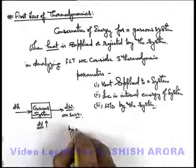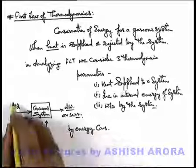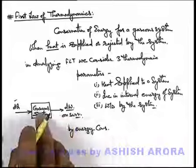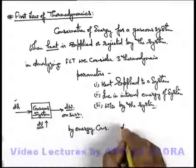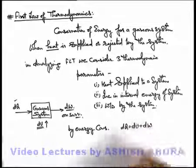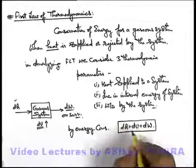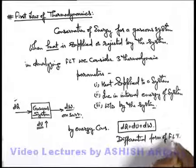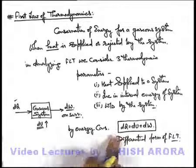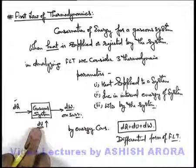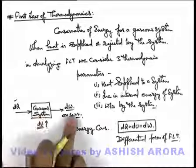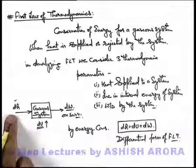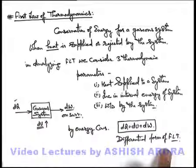So we can say, by energy conservation, dQ is the amount of heat supplied, out of which dU amount is extracted by the system to raise its own temperature, and in expansion, if it is doing some work dW on its surrounding, then we can simply state: dQ = dU + dW. This is called the differential form of the first law of thermodynamics, as we are analyzing first law for a differential amount of heat supply.